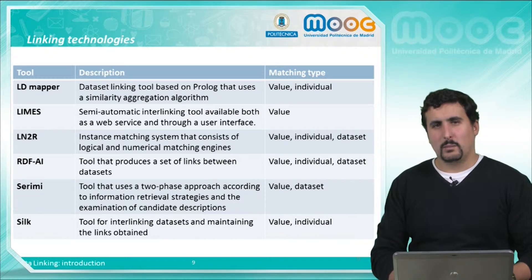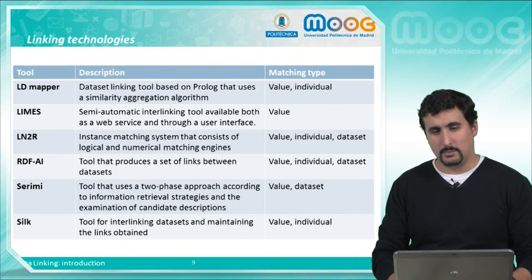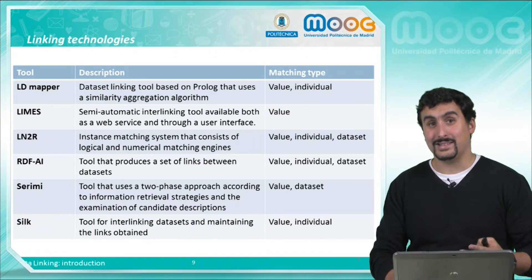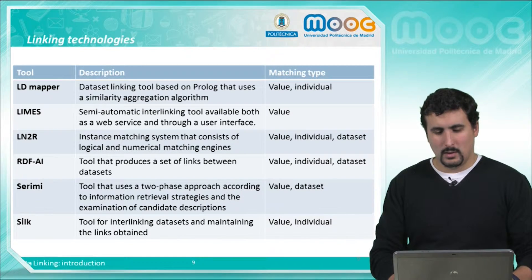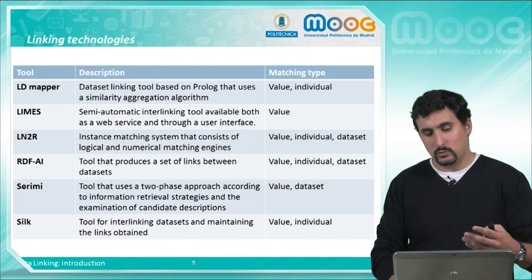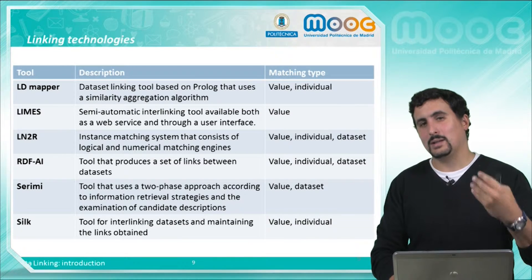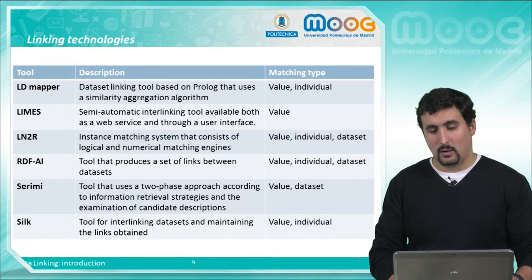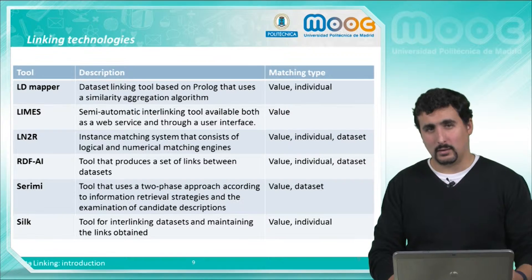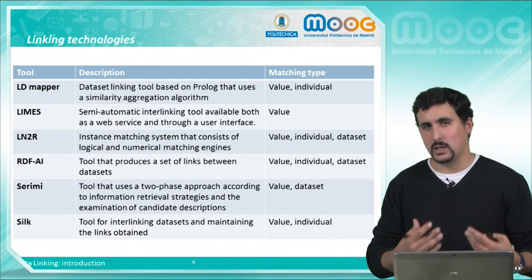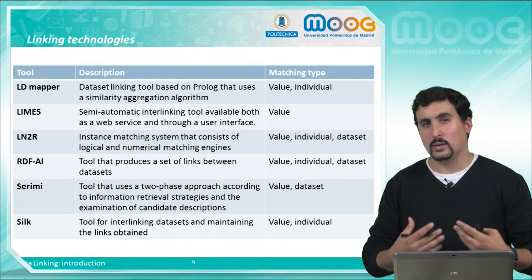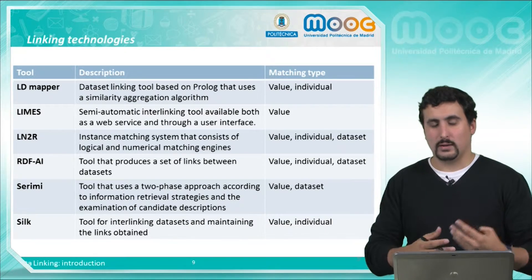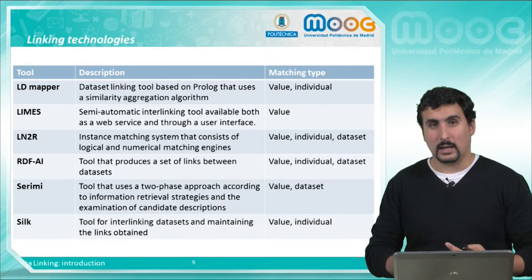Here we have some of the most relevant tools for matching datasets. Each one implements one or more of the techniques introduced before. These tools aim to automate the process, but in many cases we have to assist the process to guarantee that the results are correct. After applying these tools, we always have to check whether the results obtained are valid or if we have to refine them in any way.